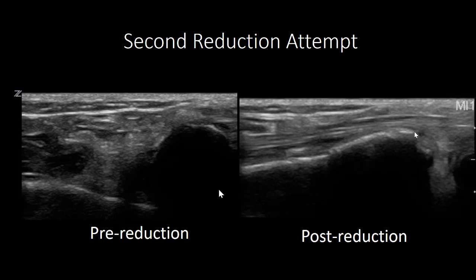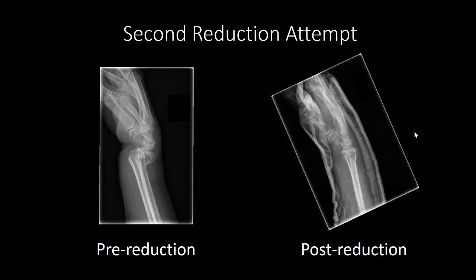We can now go ahead and put the cast on. Once we put the cast on, molded it in place, and shot another X-ray, you can see that the reduction is adequate.